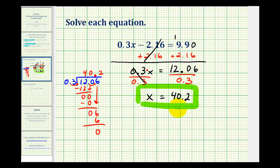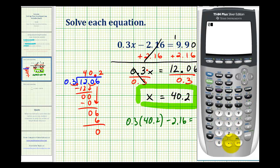If this solution is correct, it must satisfy the original equation. Which means that 0.3 times 40.2 minus 2.16 must equal 9.9. Let's go ahead and check this on the calculator. So, this does verify that our solution is correct.